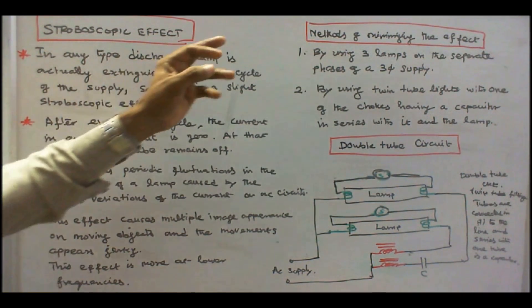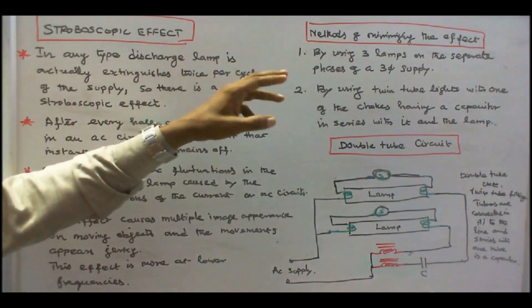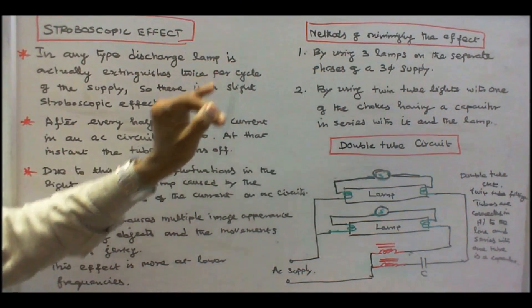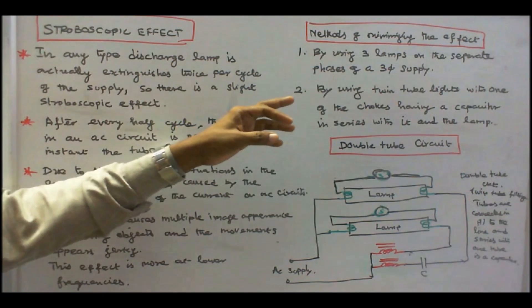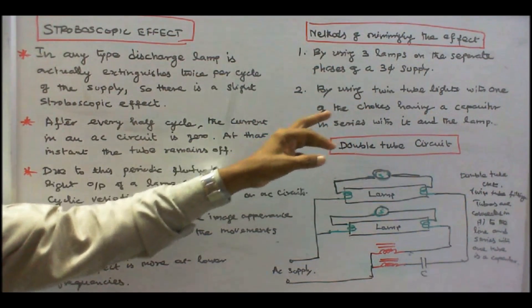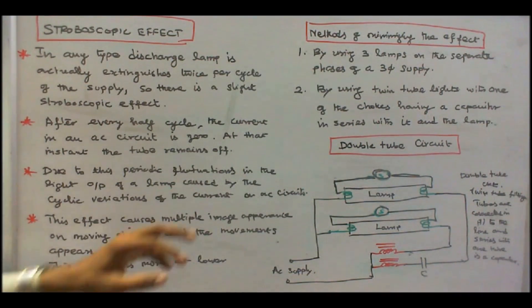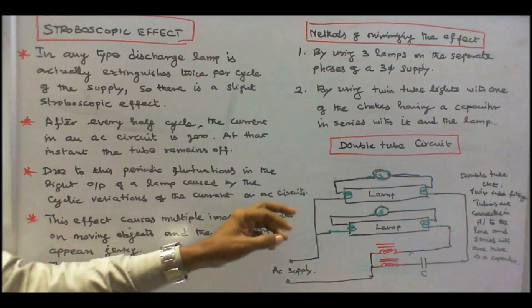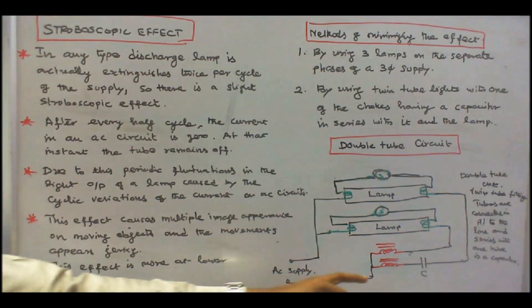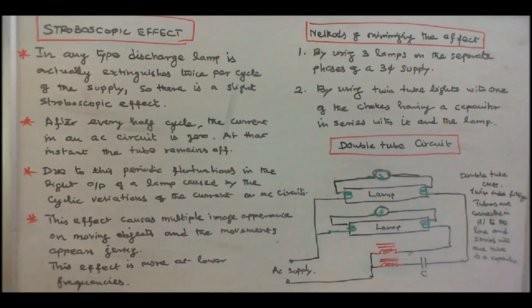The next is methods of minimizing the stroboscopic effect. Number 1, by using 3 lamps on the separate phases of a 3-phase supply. Number 2, by using twin tube lights or double tube lights with one of the choke having a capacitor in series with it and the lamp. So this is the double tube light circuit. Here the tubes are connected in parallel to the line. And in series with one tube is a capacitor. Here this is a capacitor C. So this is the arrangement. In many industries, they are using twin tube lights. The reason is to minimize the stroboscopic effect.